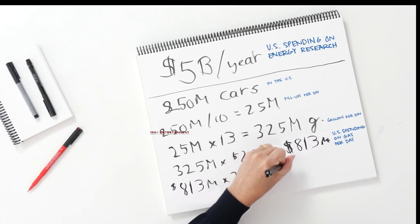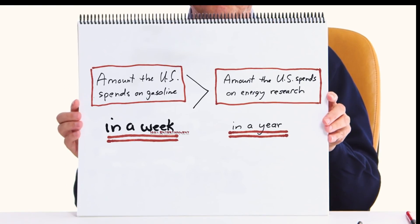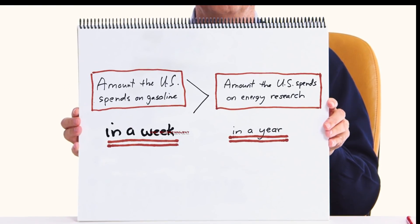Multiply by 7 and we get close to 6 billion. The actual number is about 6.4 billion. So this is very close but the result is pretty stunning. We spend more in a week on gasoline here than we spend on the entire energy research budget.